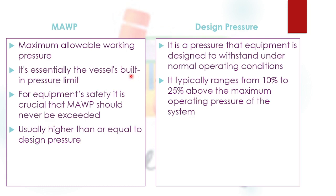So the maximum operating pressure is 100 psig and the design pressure is, let's say, 125 psig. When that equipment is built, it must be built with a different thickness than what was calculated during the design phase. For example, the minimum thickness required to withstand the maximum operating pressure is 5 mm, but when the vessel is built, it is built using a plate with a thickness of 6 mm.